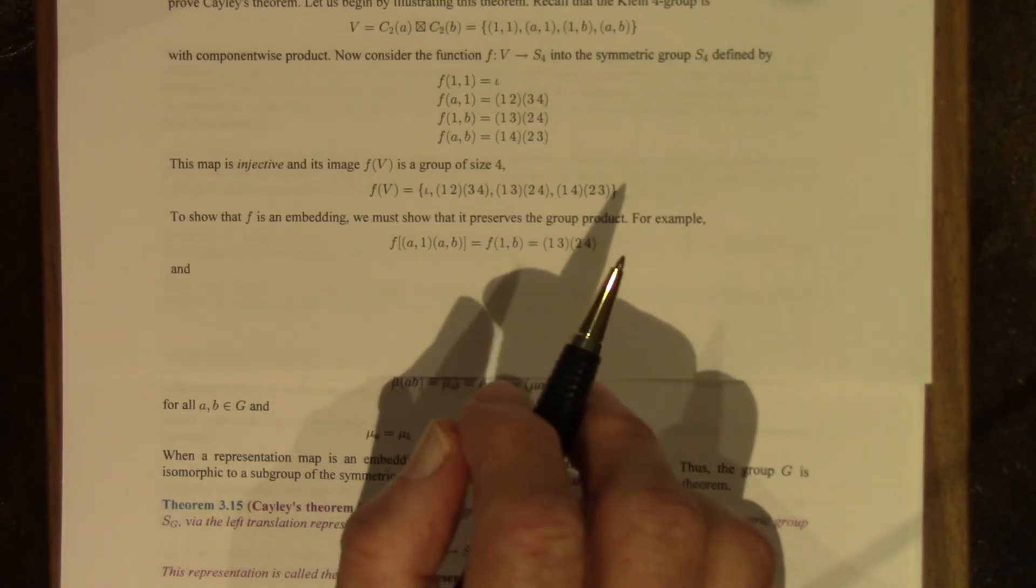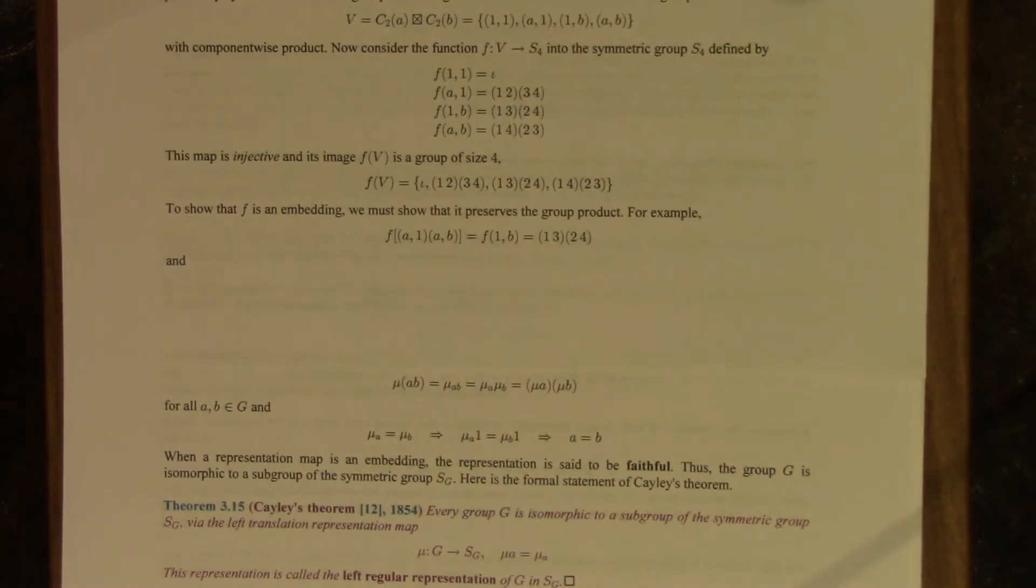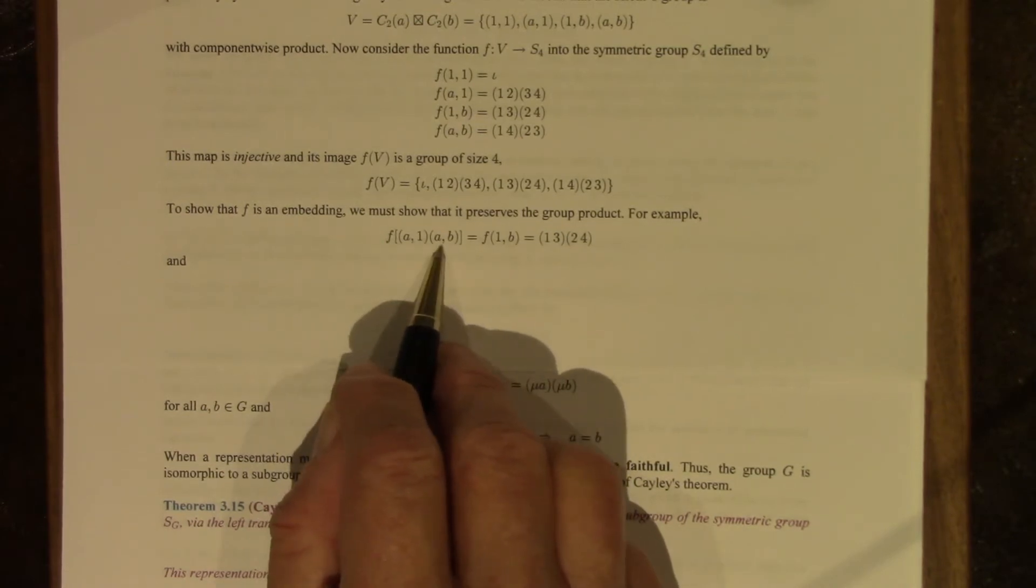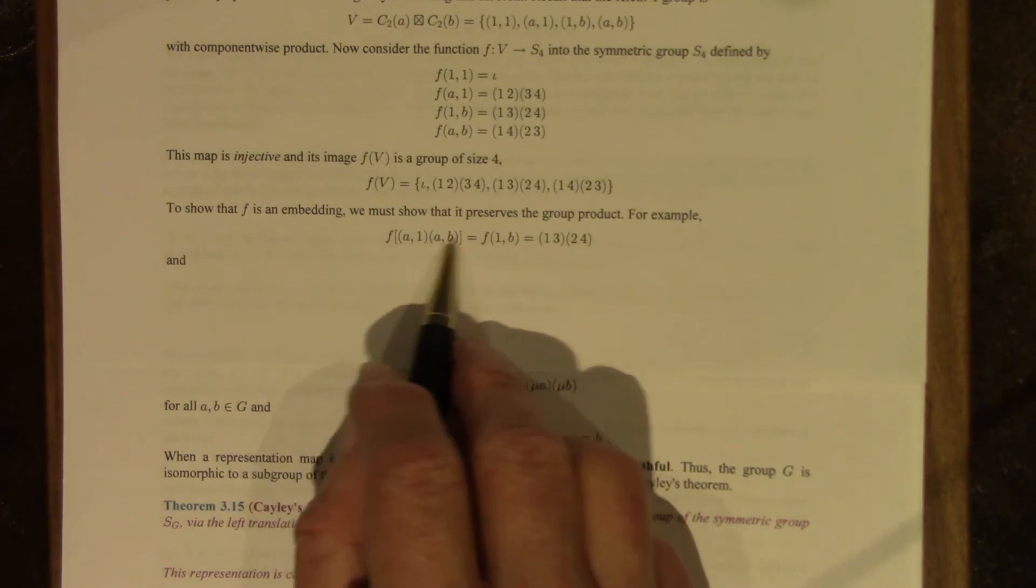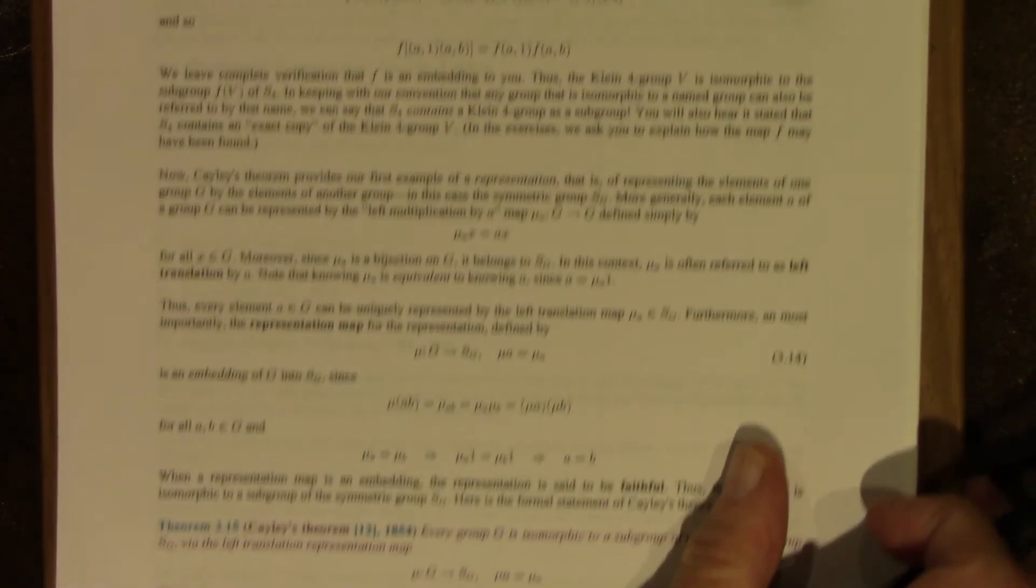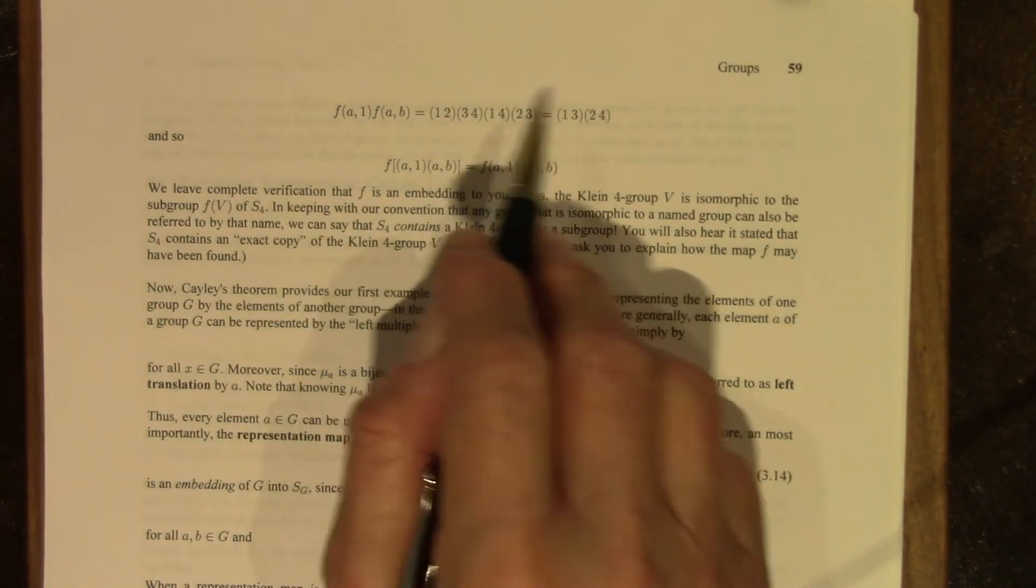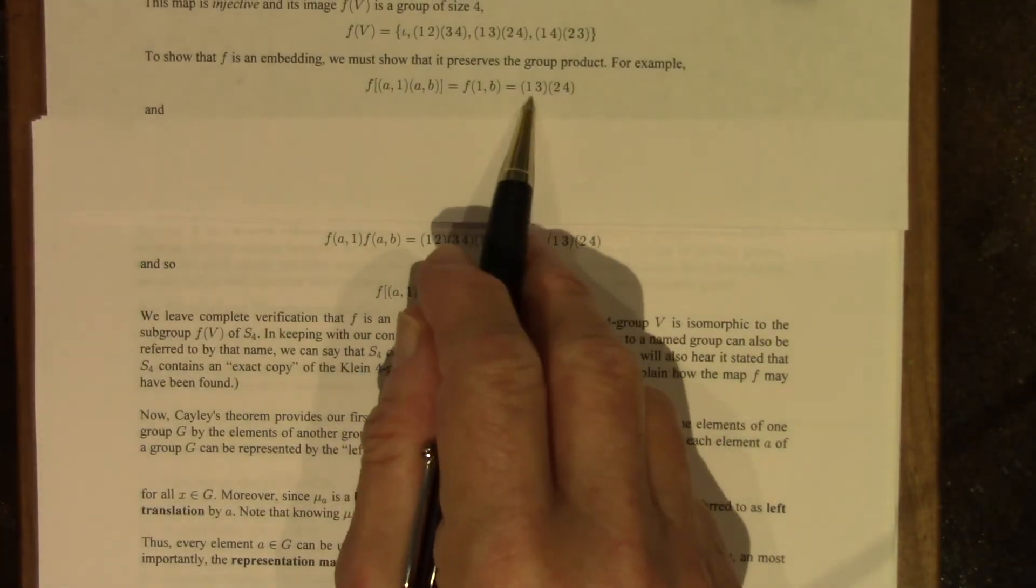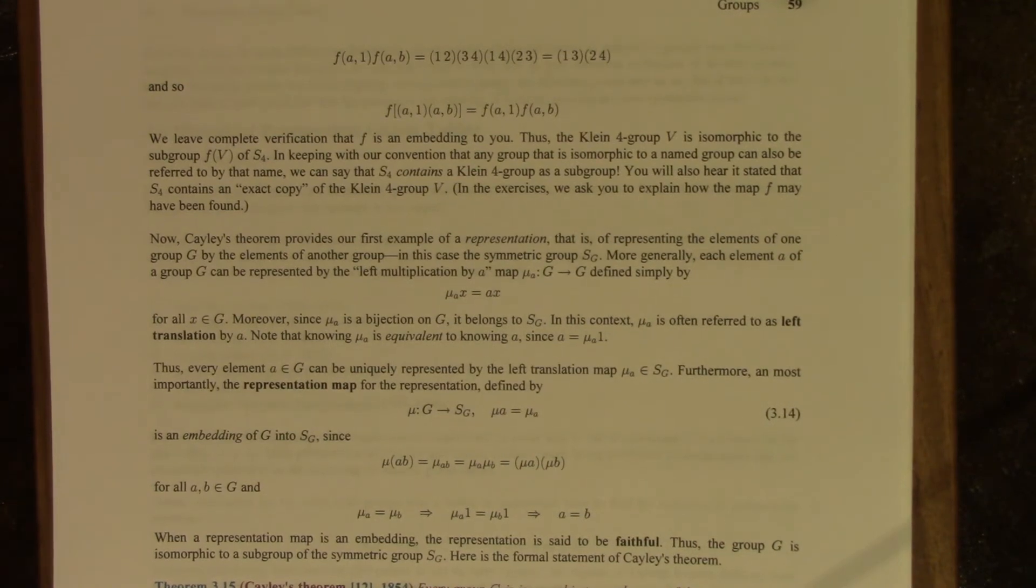It is also in fact a homomorphism, and that makes it an embedding, and to show that it's a homomorphism, we have to show it preserves the group product. Here's an example, if I apply the function to the product of these two ordered pairs, the product of these ordered pairs is 1b, because a squared is 1, and that's this. If instead I apply the function to each factor, I get this product, which also works out to be the same 1, 3, 2, 4. So you can check the rest of it. It's tedious, but not very difficult. And you will see that this is in fact an embedding. So the Klein four group is isomorphic to this subgroup of S4.